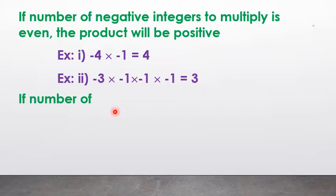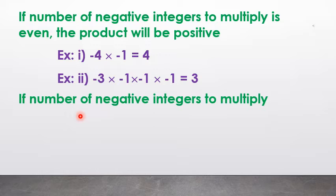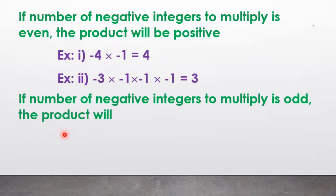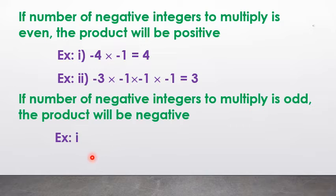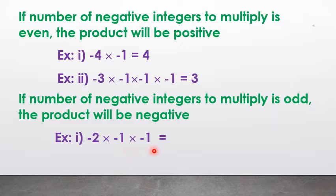If the number of negative integers to multiply is odd, the product will be negative. For example, (−2) × (−1) × (−1) = −2. Here there are 3 negative signs. 3 is an odd number, so the product is negative.